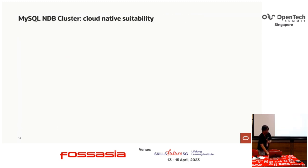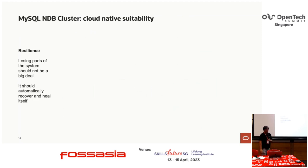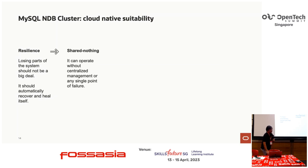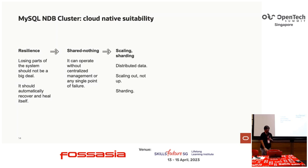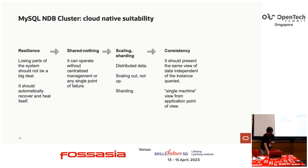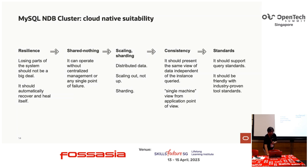NDB clusters are very suitable for running in Kubernetes because of their resiliency — NDB cluster is a shared-nothing architecture that can operate without centralized management or any single point of failure. It is completely highly available and scaling is very easy with data sharded across NDB data nodes. It also provides consistency and supports SQL query standards, with the SQL node acting like a normal MySQL instance with NDB storage engine support.